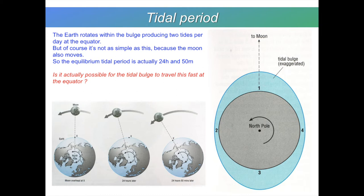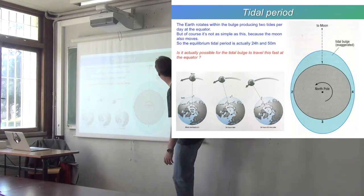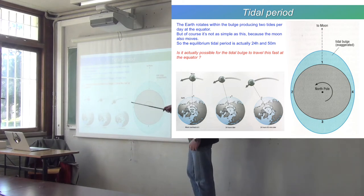So, what is the actual tidal period? The Earth rotates within the bulge, producing two tides per day. So here we have that sort of plan view of that. So here's the North Pole. The Earth's rotating like this in these four positions. One, two, three, four. So high tide, low tide, high tide, low tide.